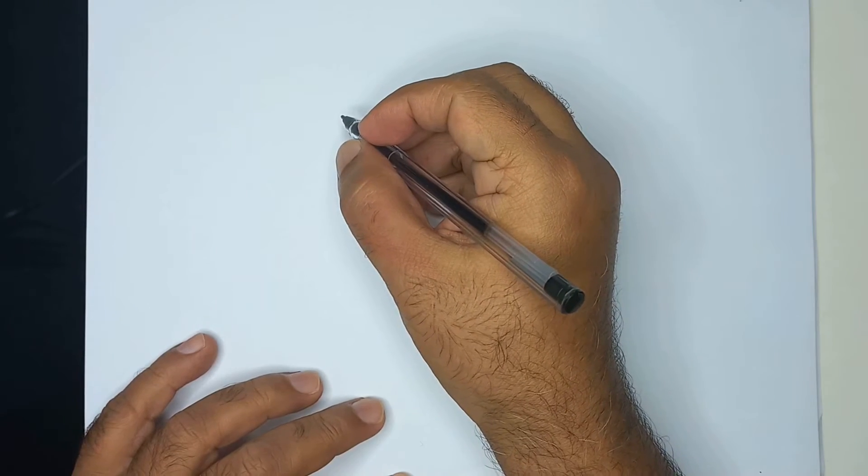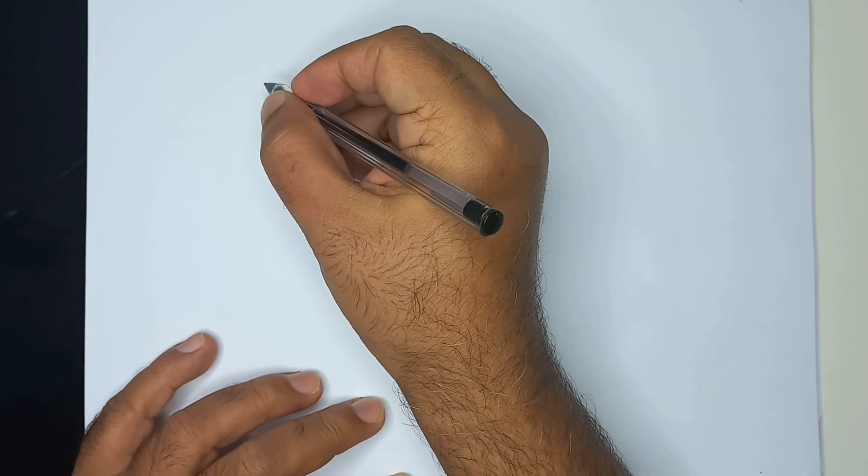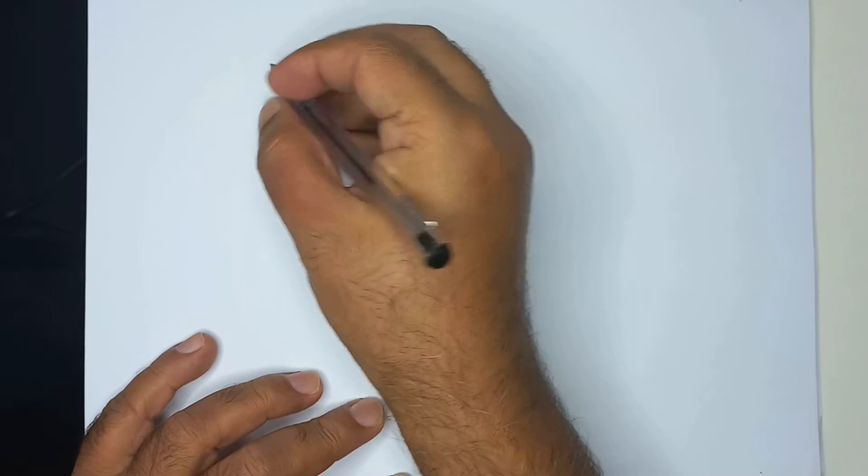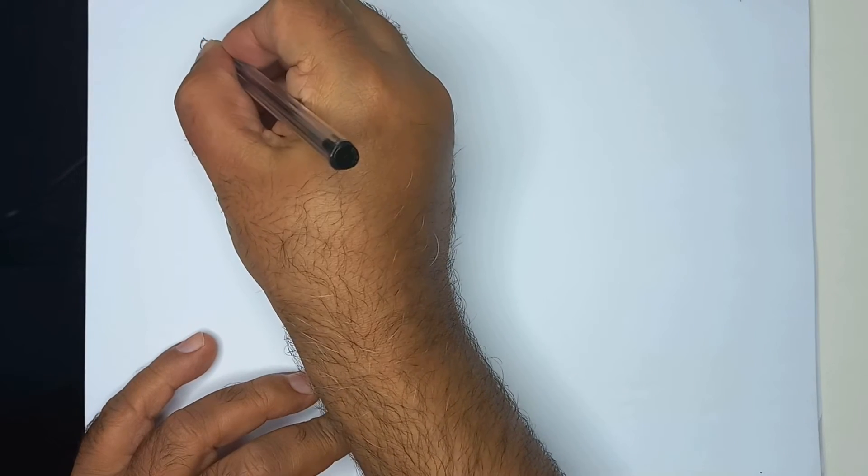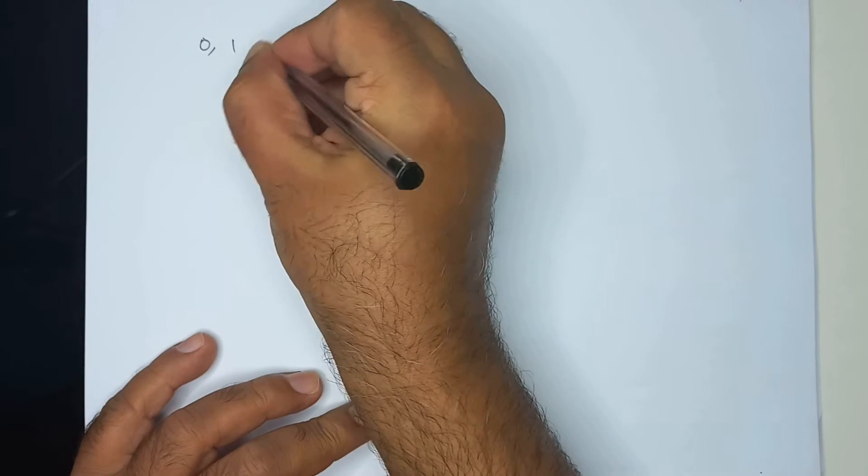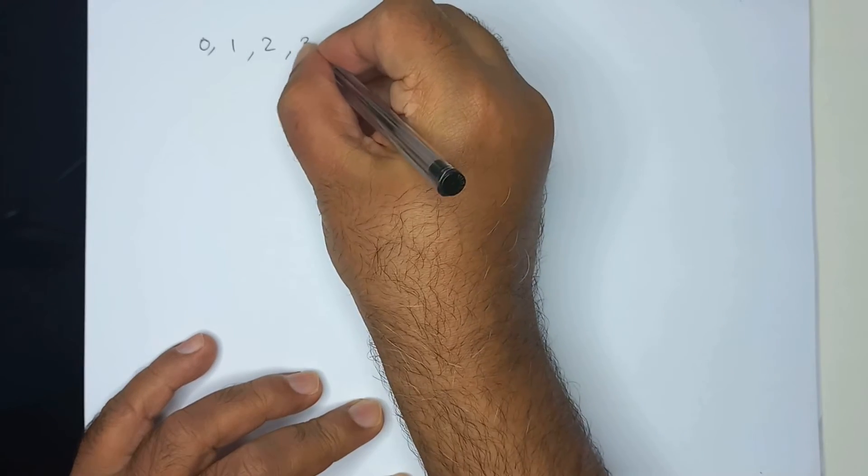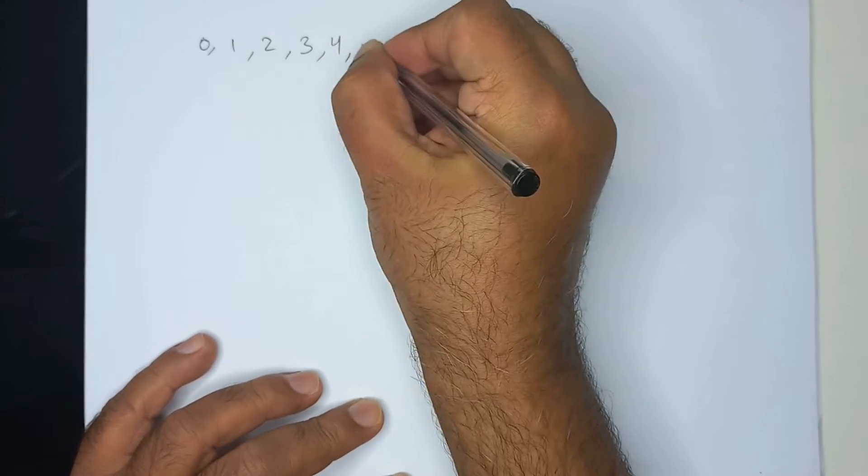Numbers begin with 0. This is the introduction to numbers. So 0, 1, 2, then comes 3, 4 and so on.